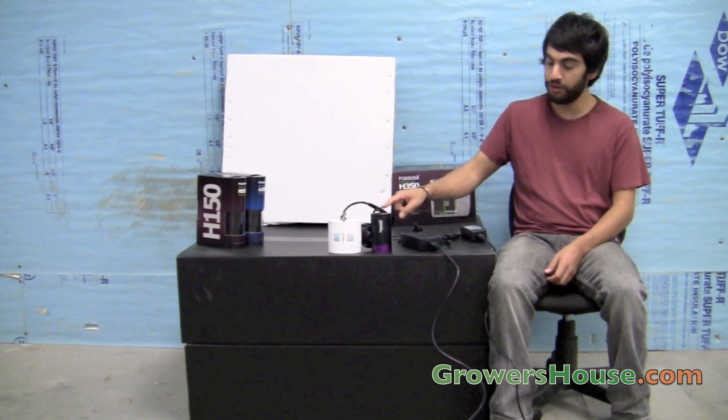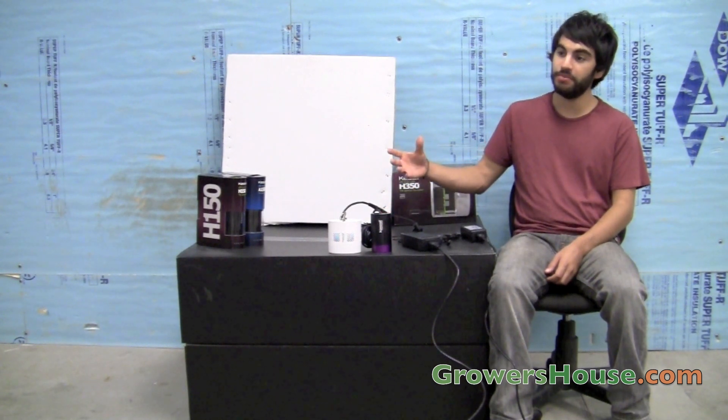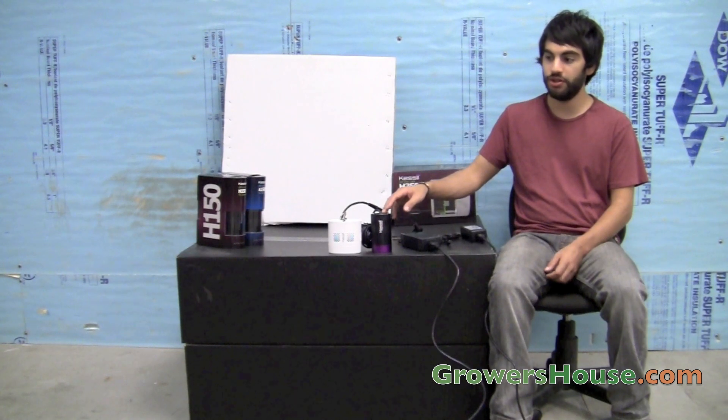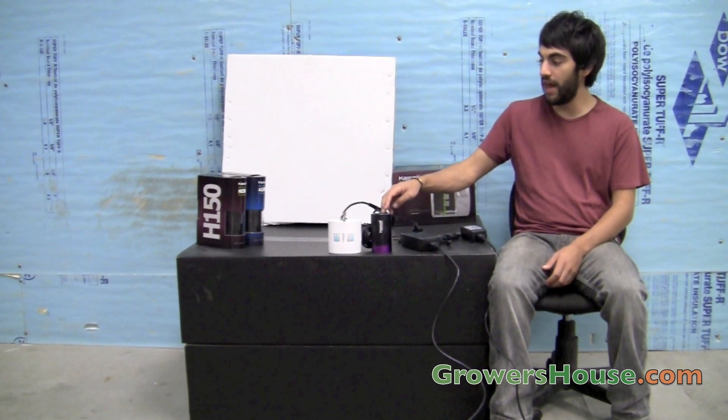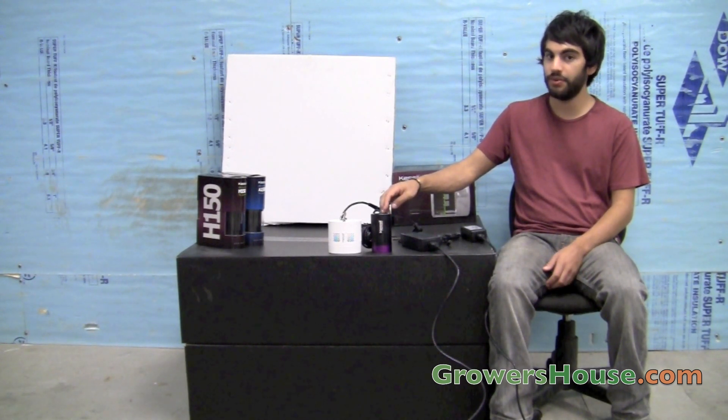Now the blue is primarily made to be used as supplemental lighting during the vegetative phase to your standard light, whether that be another LED or a metal halide light or a T5. And the red is made for supplemental lighting for your flowering phase, whether you use an HPS or other form of red lighting.